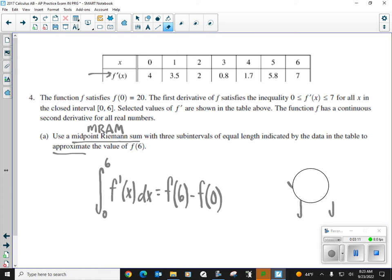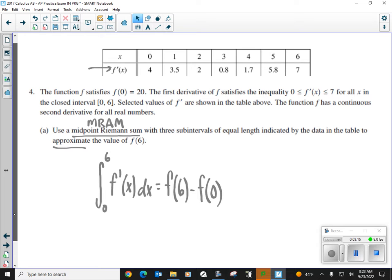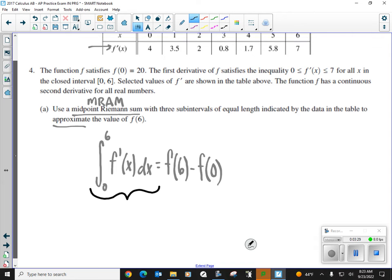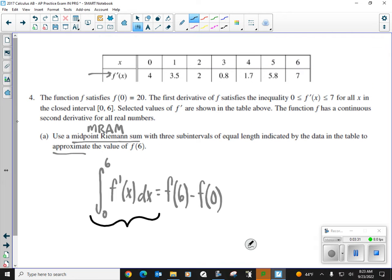Okay. So if I have f prime and go backward, that's my original equation. So I would have my original equation for my upper bound of six minus my lower bound in the original equation of zero. And this is what I'm going to use. All right. Let me get rid of this right here. The thing is, we don't have an equation to do the integral. So we're going to use Riemann sum. In this case, a midpoint Riemann sum.